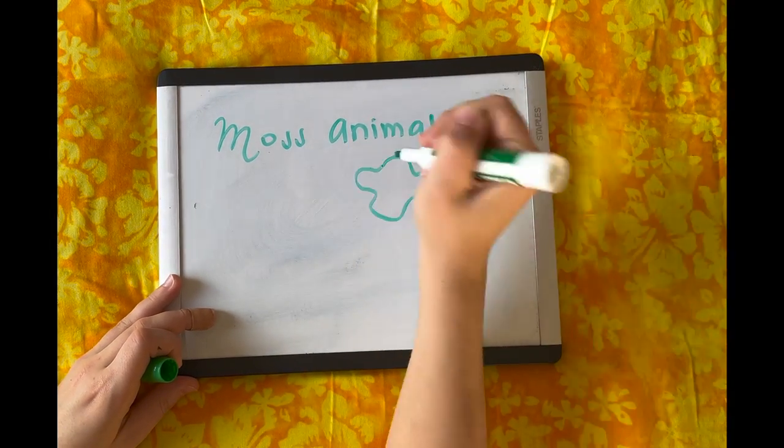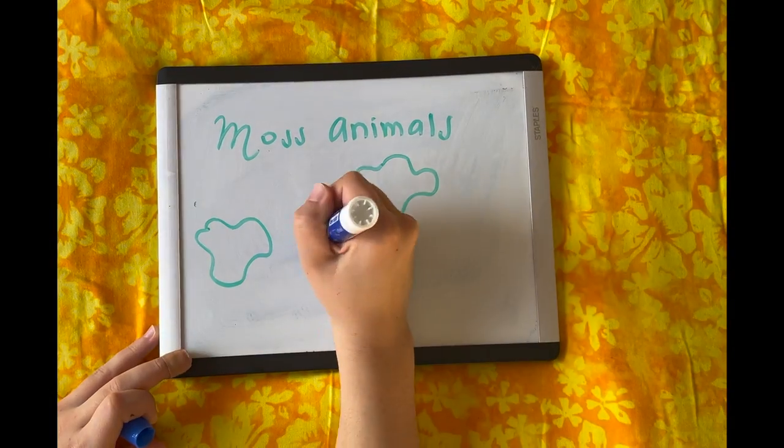The Bryozoa is a moss animal that can usually be found in a marine or freshwater ecosystem.